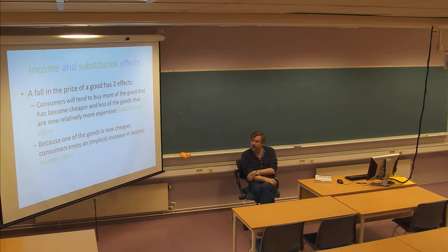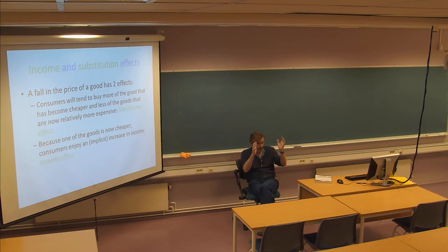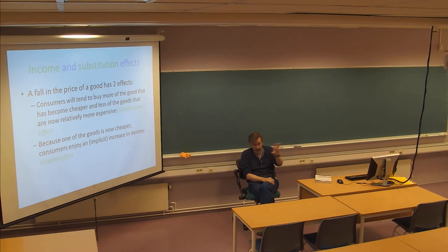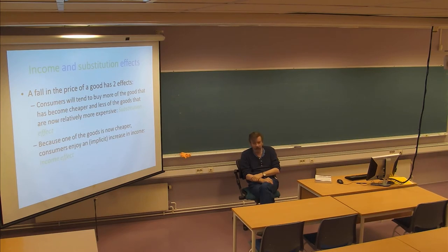But importantly, because one good is now cheaper, consumers enjoy an implicit increase in income. If you reduce the price on one good and the others are kept constant, the average price in the economy goes down, creating an implicit income increase for consumers. This is called the income effect. So the total effect of a price decrease can be decomposed into the substitution effect and the income effect.